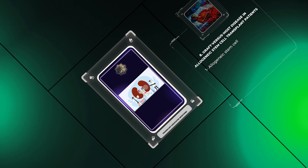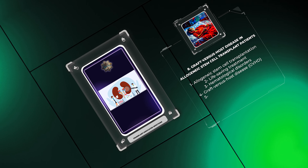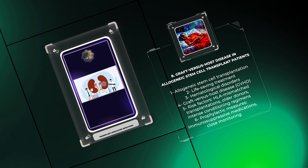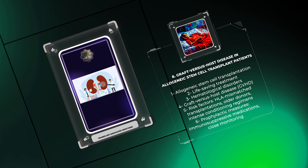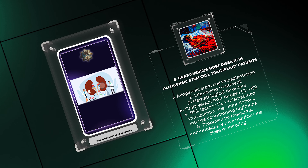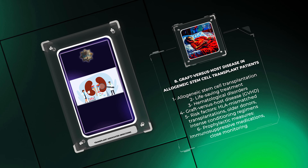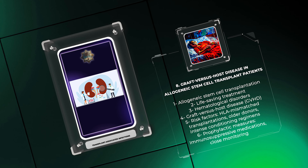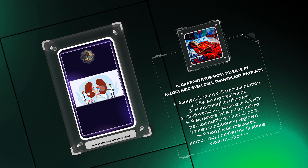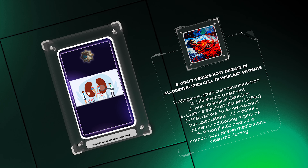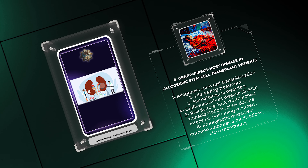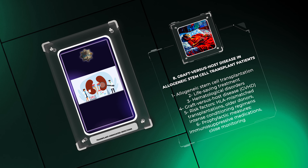Allogeneic stem cell transplantation is a life-saving treatment for hematological disorders, but graft-versus-host disease (GVHD) can occur post-transplantation. Risk factors for GVHD include HLA-mismatched transplantations, older donors, and intense conditioning regimens. Prophylactic measures involve immunosuppressive medications and close monitoring.